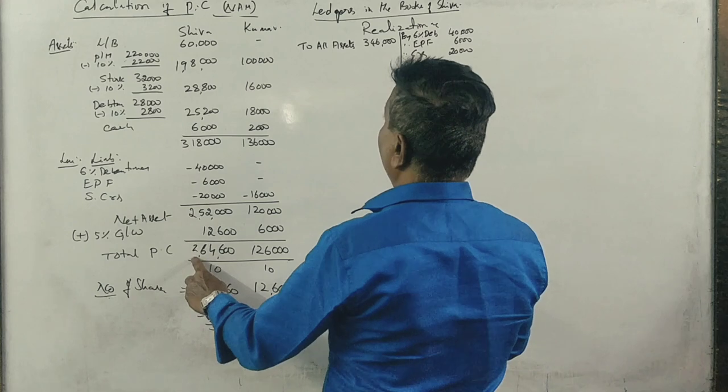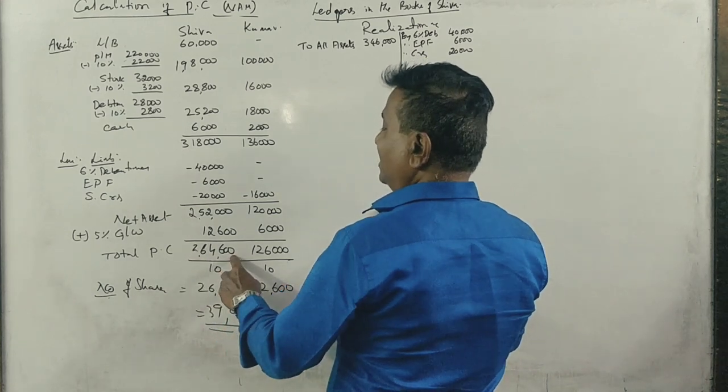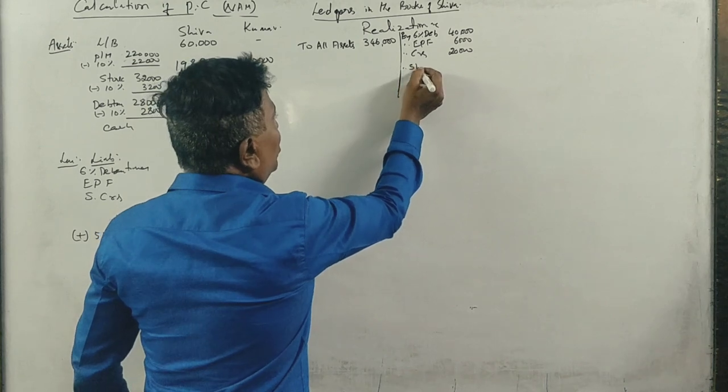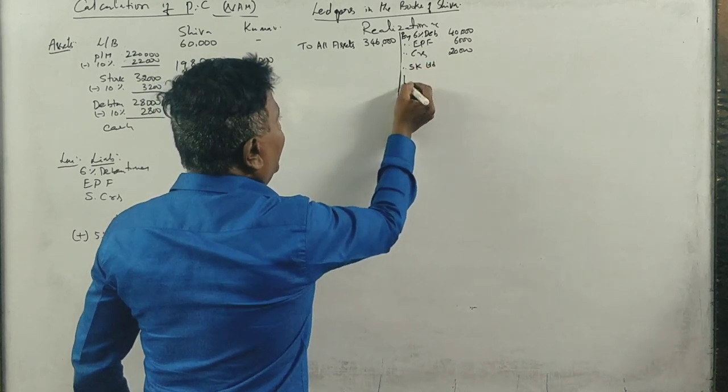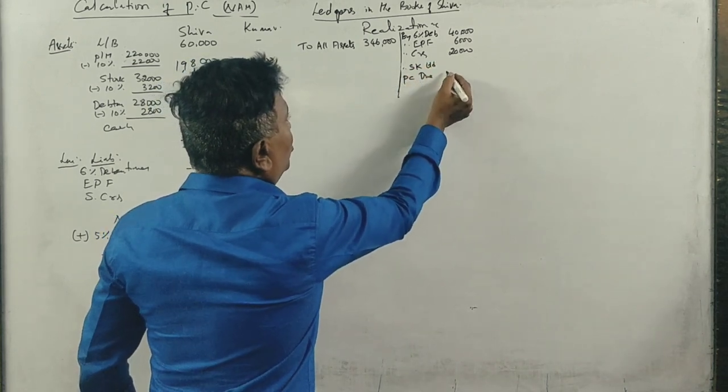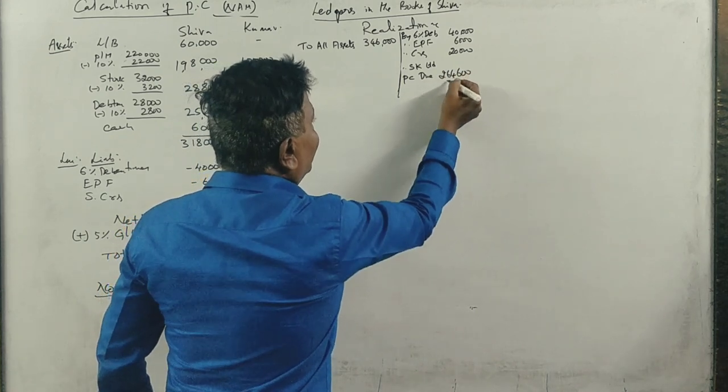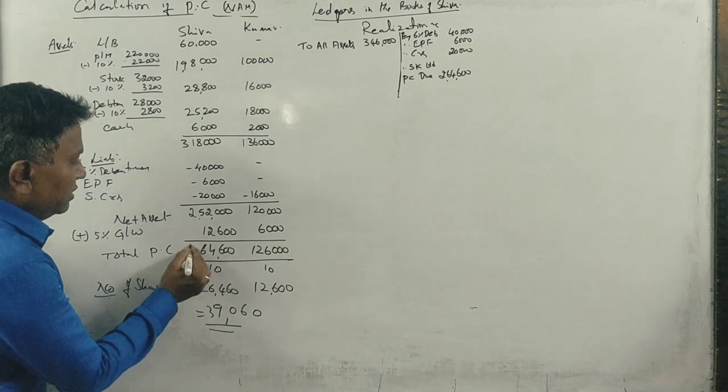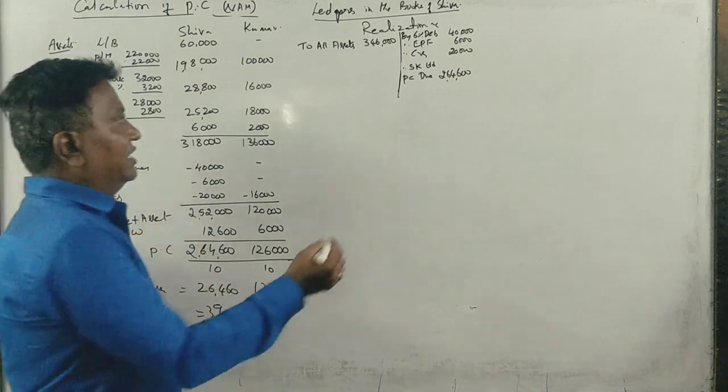Now, what is the amount of PC? 2,64,600. Here, Shivakumar company limited, what is PC? 2,64,600 correct?